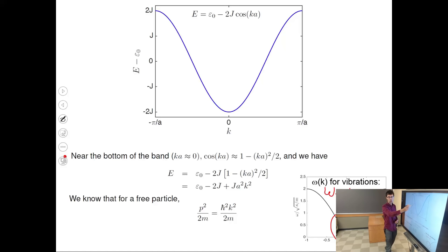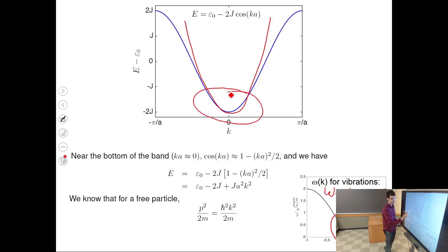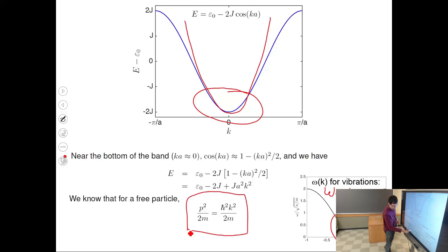For phonons we had a sine function, which near k=0 approximates a straight line — we could talk about sound waves propagating with a fixed velocity. Here the cosine near k=0 approximates as a parabola. Particles at the bottom of the band live in a parabolic dispersion relation — which is exactly the free-particle dispersion. Despite introducing all the hopping and atomic structure, the result looks like free particles.